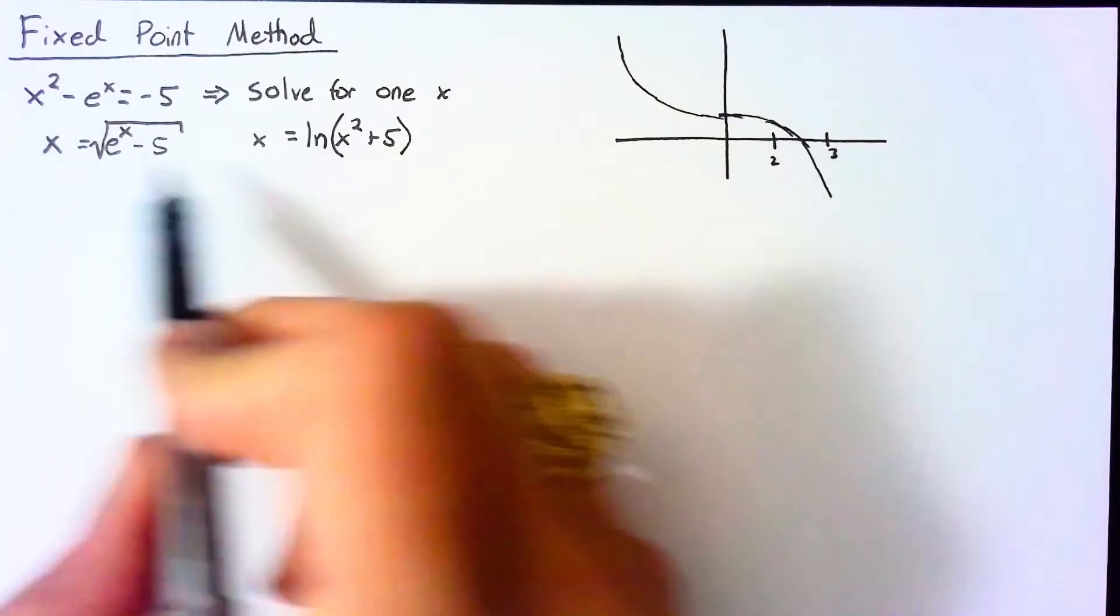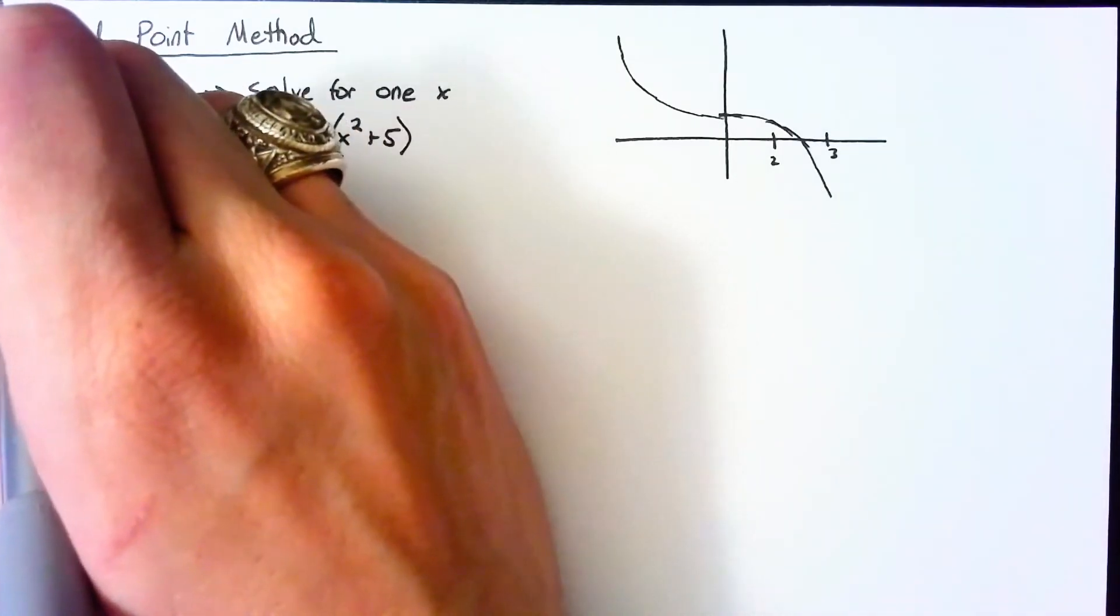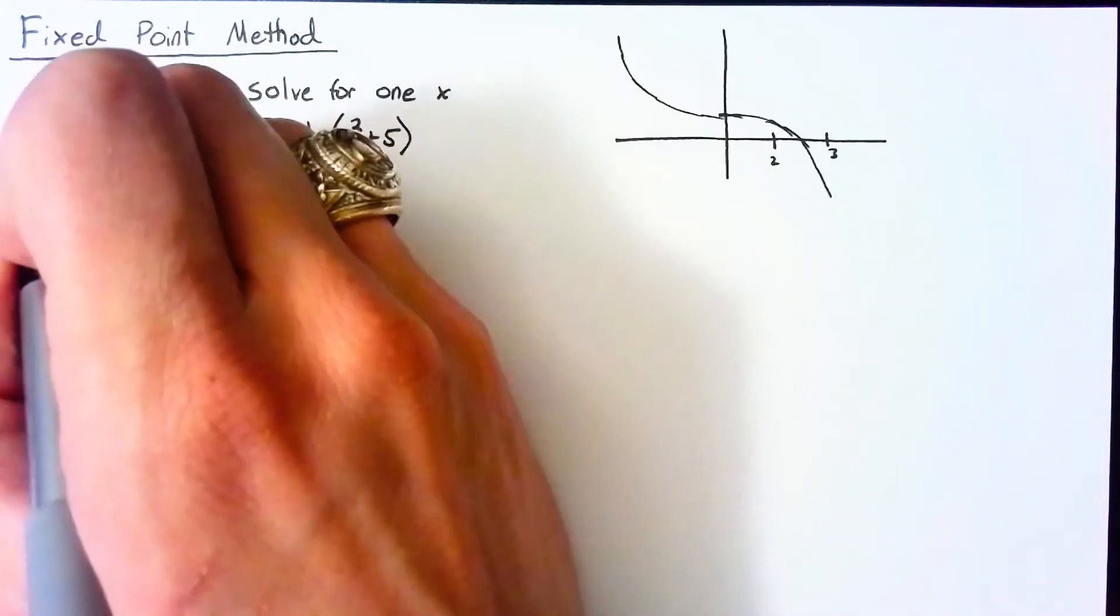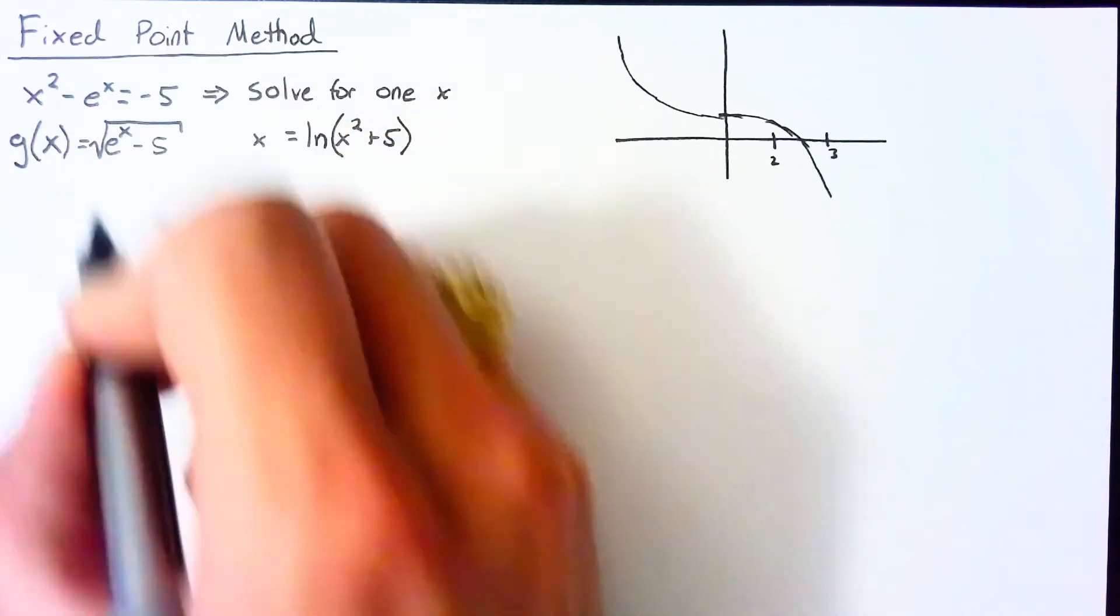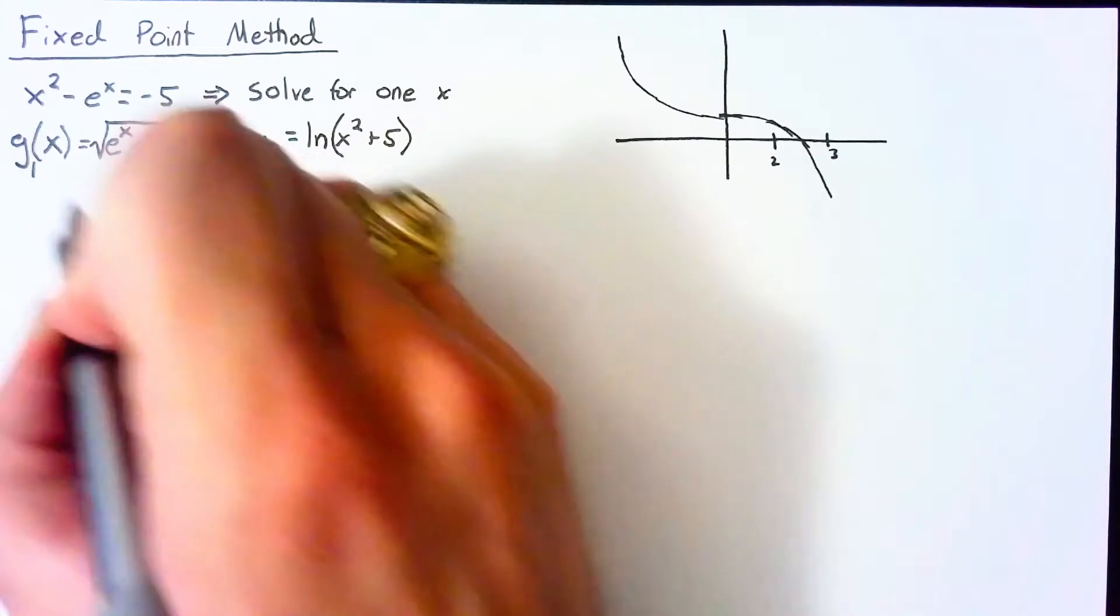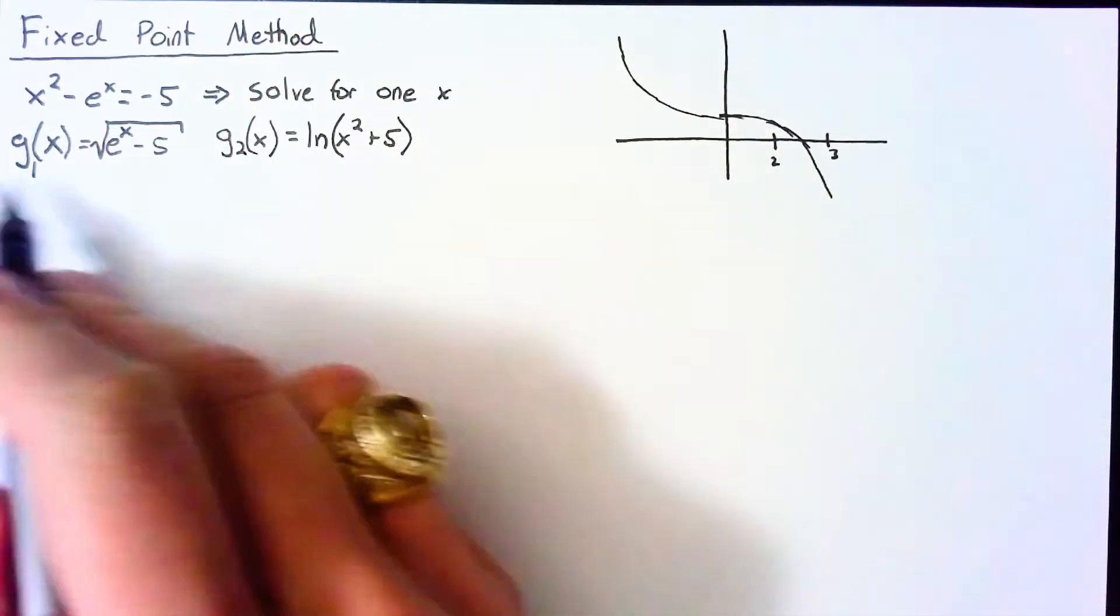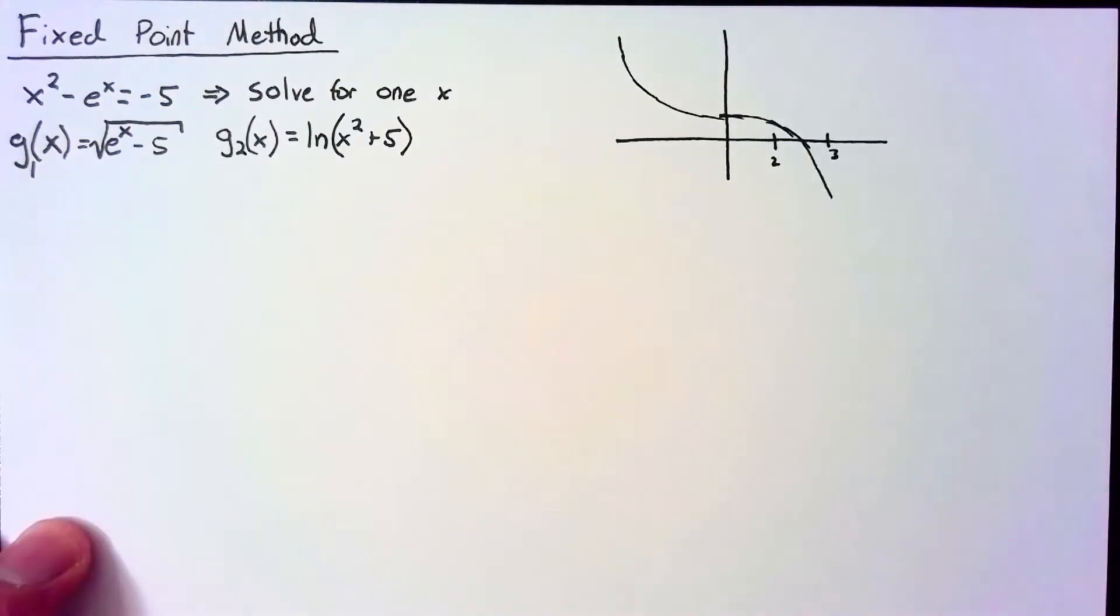Now it gets a little confusing to have all these x's running around. So the way we usually talk about this is we give this a function name, g. And since I have two separate functions here, I'm going to call this g₁ and g₂. These g functions are going to be the functions that we'll use to try and solve this equation.